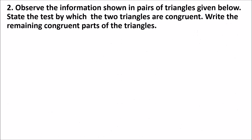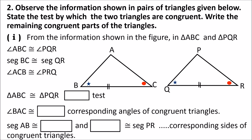In the next question, observe the information shown in pairs of triangles and state the test by which they are congruent, then write the remaining congruent parts. Angle ABC is congruent to angle PQR — these two angles got a same kind of mark. Side BC is congruent to side QR. Angle ACB is congruent to angle PRQ — these two angles got a same kind of mark. Therefore these two triangles are congruent by Angle-Side-Angle test.